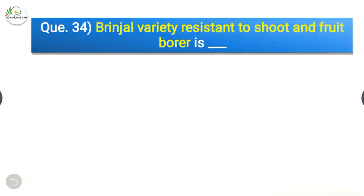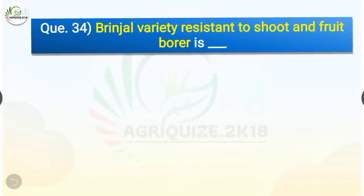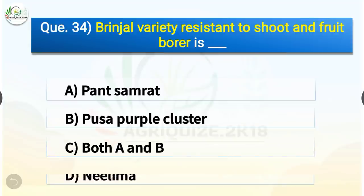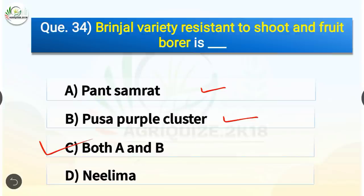Question number 34. Brinjal variety resistant to shoot and fruit borer is which? The options are Panth Samrat, Pusa Purple Cluster, both A and B, or Neelima. The correct answer is option C, both A and B. Brinjal varieties resistant to shoot and fruit borer are Panth Samrat and Pusa Purple Cluster.